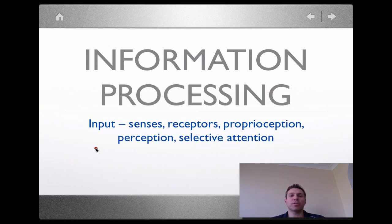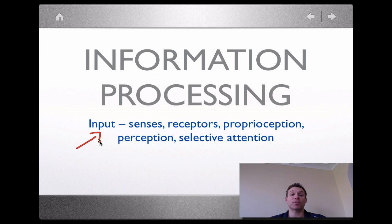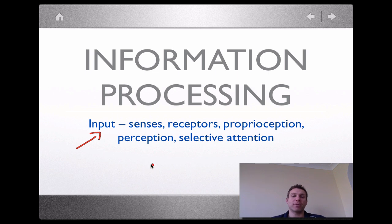Stage one of information processing. These are the factors we're going to consider. Quick reminder that the input is our environment and our display, and we have our sense organs to try and pick up everything that's going on in our environment or display. Those receptors and the proprioceptors — how you feel in the situation and your awareness of being in the situation — will come into it. Then we've got two key terms: one, perception, and two, selective attention, and those two are going to be linked together.